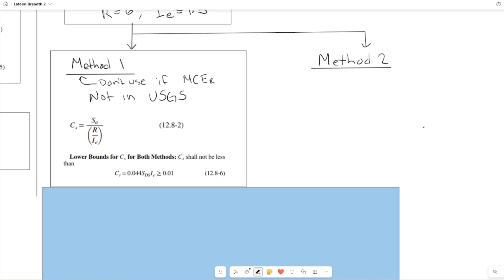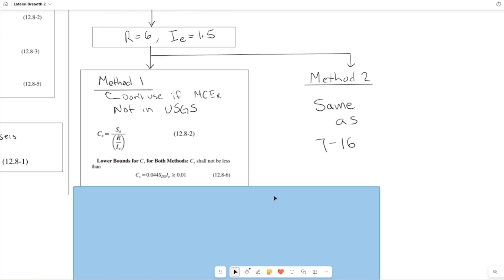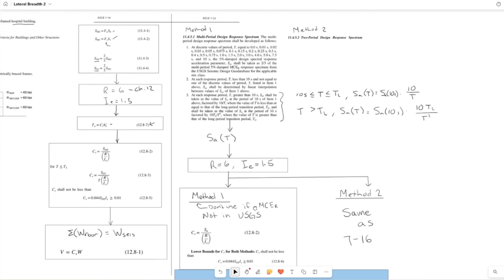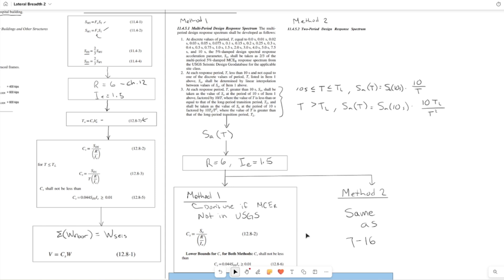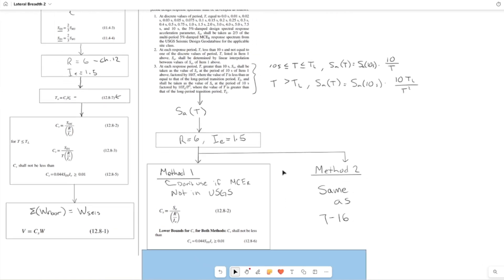So what's going on with method two? Method two is the same as 7-16. There's no difference that I could find. So in essence, they are pretty similar approaches between method one and method two. I haven't looked too deeply into why they made this change, but after writing it all out and seeing how it works, I actually kind of prefer method one, the new method. Let me know what you think in the comments. If you like the old method, if you like the new one, or if you think they should use something completely different altogether. Thanks for watching and see you next time.